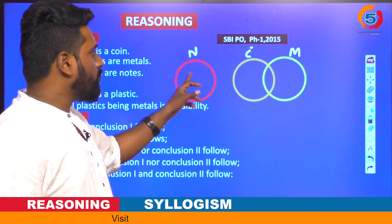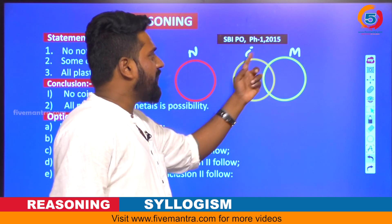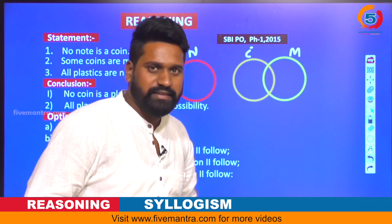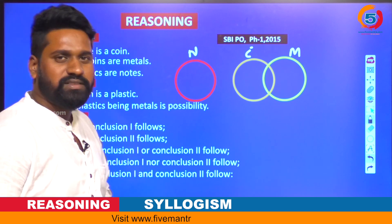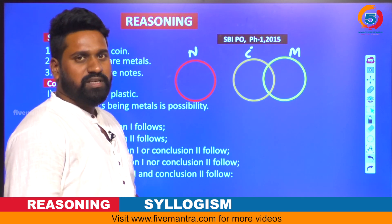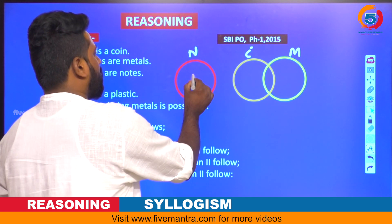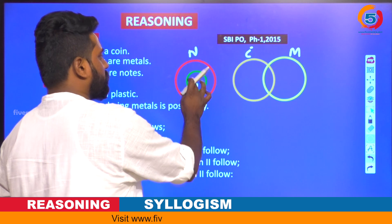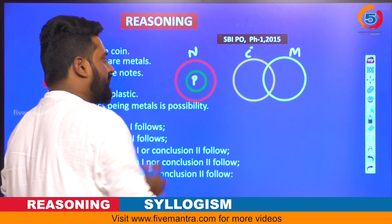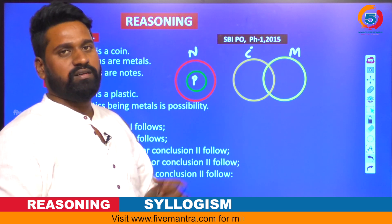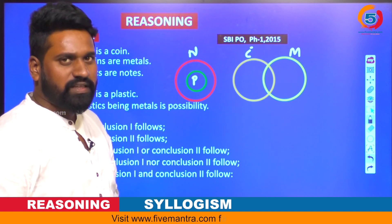So: no note is a kind gives two separate circles; some kinds are metals gives an intersection between kinds and metals. For the third statement, all plastics are notes, we take one more circle where the entire plastics circle belongs inside the notes circle.